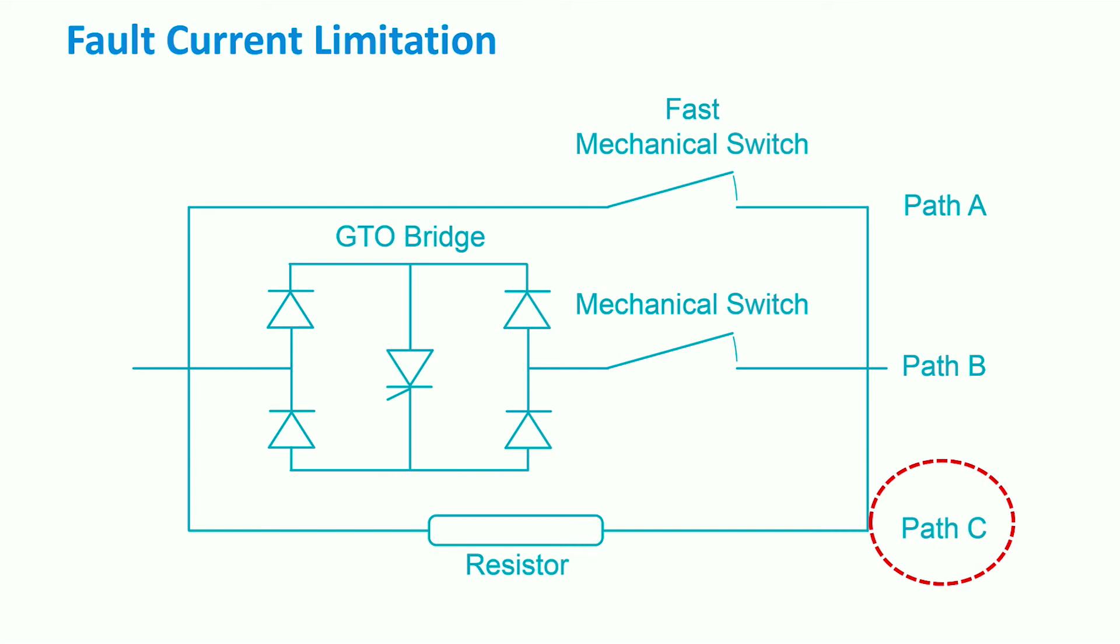When the fault occurs, the fast mechanical switch is disconnected, forcing the fault current to flow through the resistor in path B.